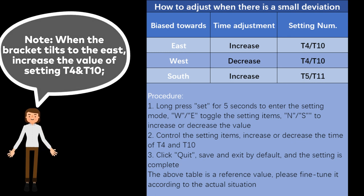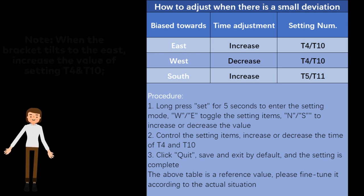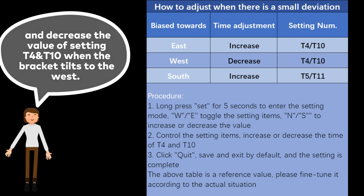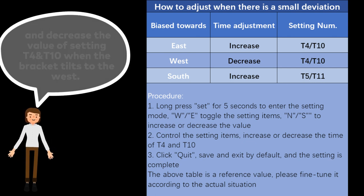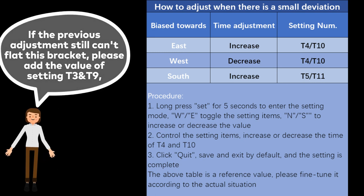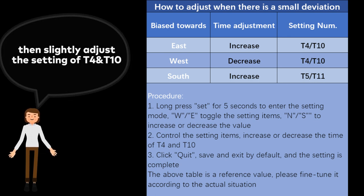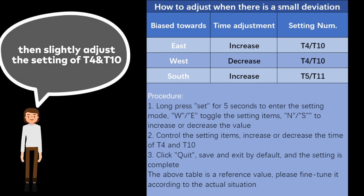Note, when the bracket tilts to the east, increase the value of setting T4 and T10. And decrease the value of setting T4 and T10 when the bracket tilts to the west. If the previous adjustment still can't flatten this bracket, please add the value of setting T3 and T9. Then slightly adjust the setting of T4 and T10.